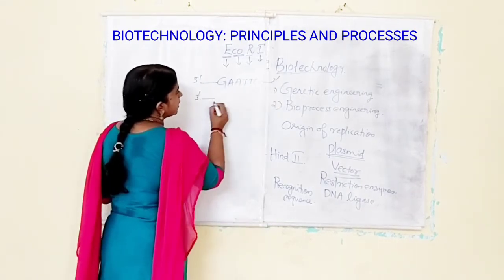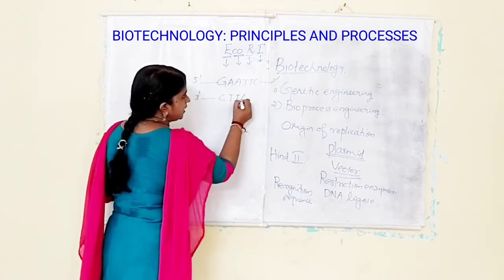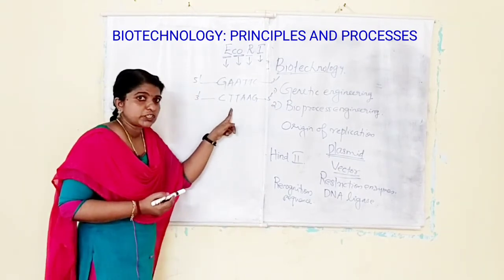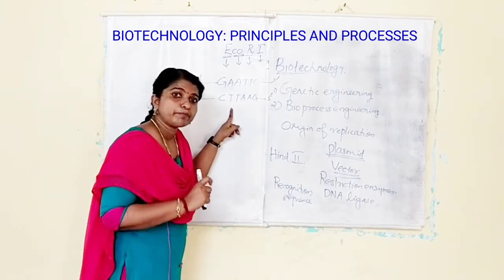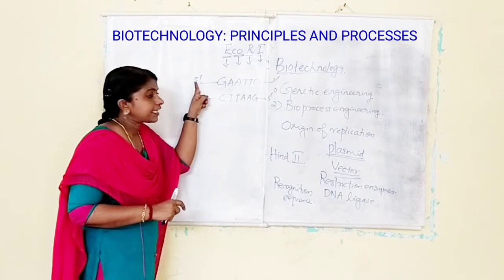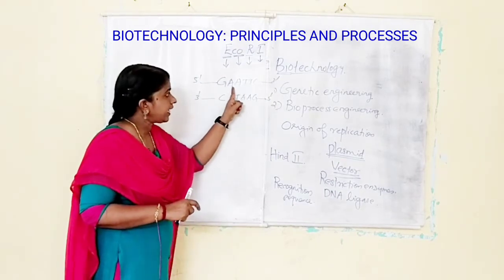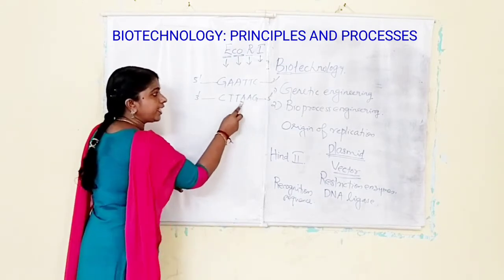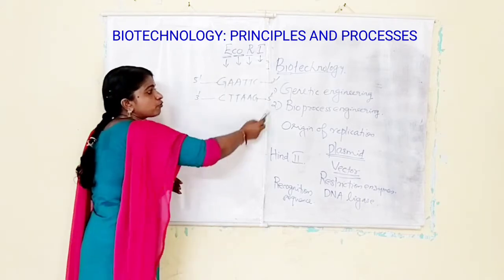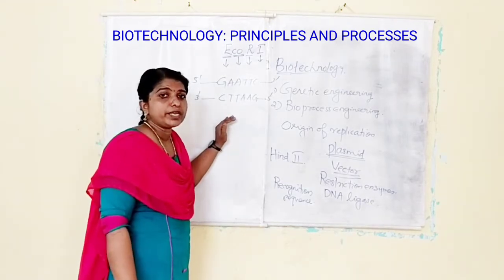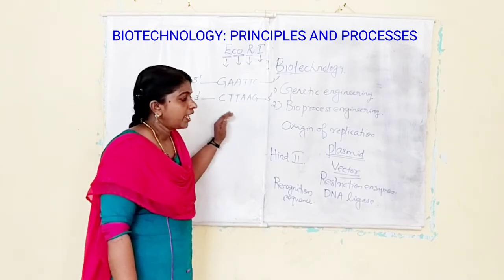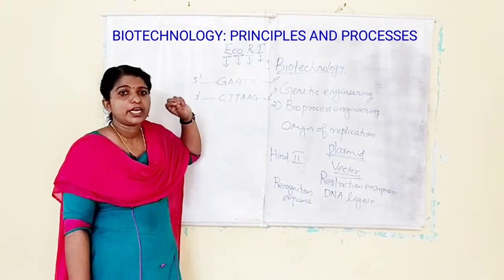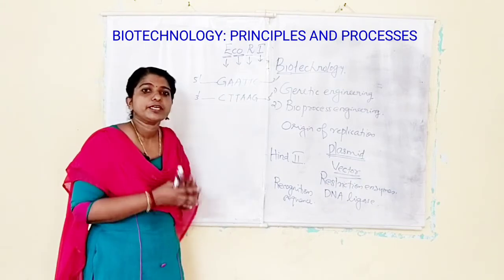On the complementary strand it reads 3'-CTTAAG-5'. When reading both strands in the 5' to 3' direction, both read GAATTC. These types of sequences are known as palindromic nucleotide sequences. Restriction enzymes normally act on these palindromic sequences — they identify the palindromic sequence and cut at specific positions.